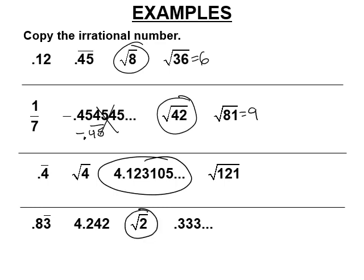Once again, 0.3 repeating is a repeating decimal, so you can't just look for the dots. Repeating decimals are rational. 0.242 is a terminating decimal — that's perfectly fine. It can be very, very long, but as long as it ends, it's rational.